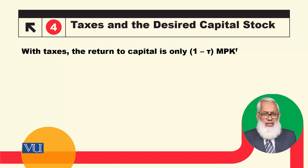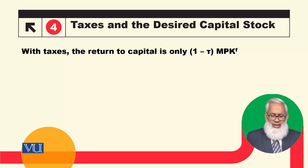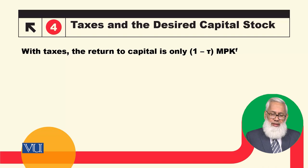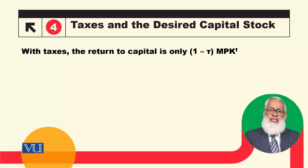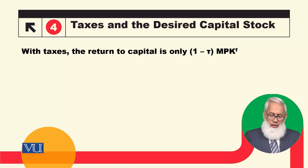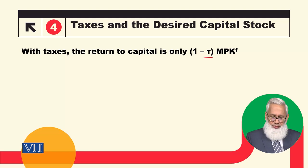اب ہم گورنمنٹ ٹیکسس کا امپیکٹ ڈیزائرڈ لیول آف کیپیٹل سٹاک پر دیکھتے ہیں۔ فرم کو جو ریٹرن مل رہے ہیں — یعنی مارجنل پروڈکٹ آف کیپیٹل — اگر گورنمنٹ اس پر ٹیکس امپوز کر دے تو اب ریٹرن کم ہو جائے گی۔ مثلاً MPK 20 ہے اور گورنمنٹ نے 20% ٹیکس لگا دیا ہے تو فرم کو صرف 16 ڈالر ملیں گے۔ تو فرم کو آفٹر ٹیکس ریٹرن کنسیڈر کرنا ہوگا: (1 - T) × MPK، جہاں T ٹیکس ریٹ ہے۔